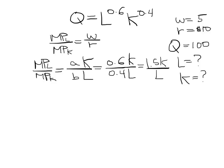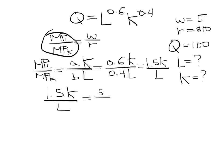Now we replace that term in the minimizing cost equation. We know that 1.5K over L equals the ratio of the prices, where W is $5 and R is $10. So the minimizing cost equation for this problem becomes 1.5K/L = 5/10. We can further simplify by cross-multiplying, and we end up with L equals 3K.